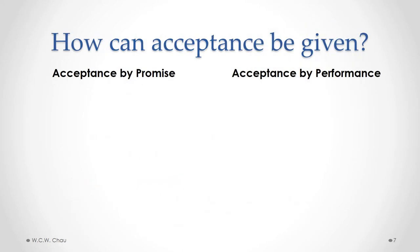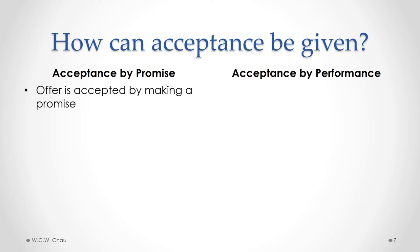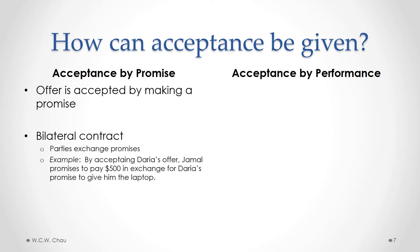How can acceptance be given? It can be given by either the making of a promise or by performing what is required by the terms of an offer. For acceptance by promise, an offer is accepted by making a promise, forming what is called a bilateral contract where the parties are exchanging promises — each party is making a promise to the other. For example, by accepting Daria's offer, Jamal promises to pay $500 in exchange for Daria's promise to give him the laptop.